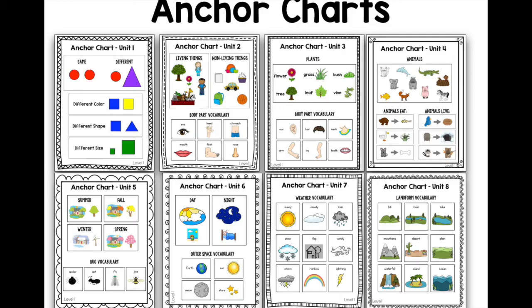Here are the anchor charts again with all the concepts included: unit one, same and different; unit two, living non-living with body parts; unit three, more body parts plus plants; unit four, animals; unit five, seasons and bugs; unit six, day and night and outer space; unit seven, weather; and unit eight, landforms.